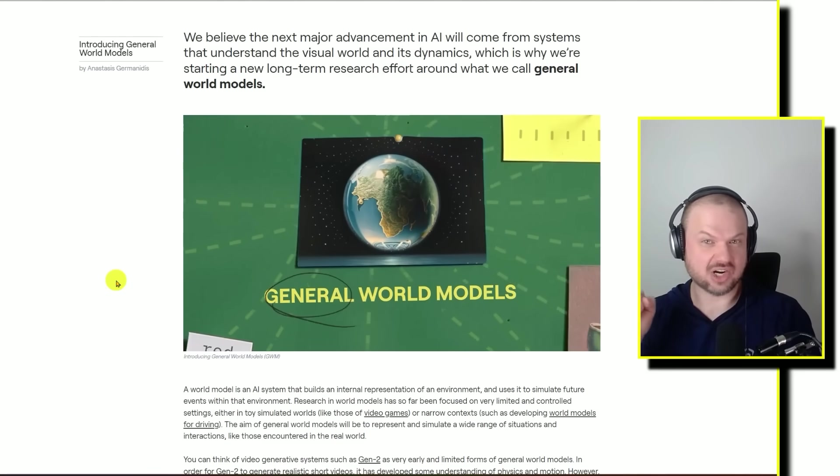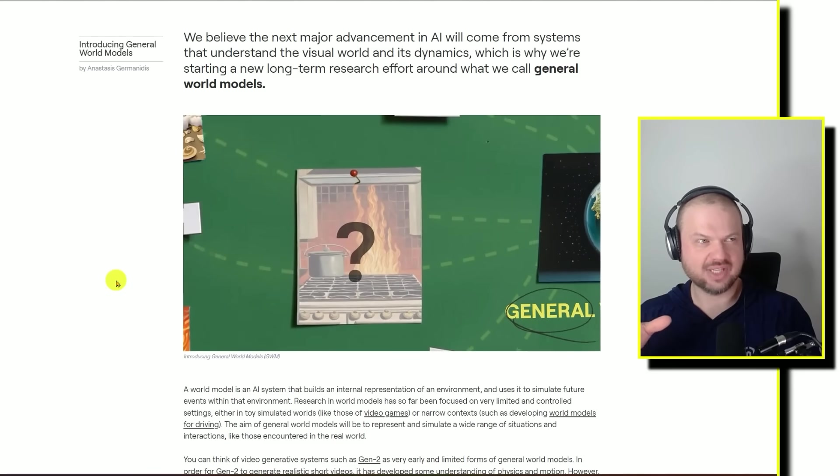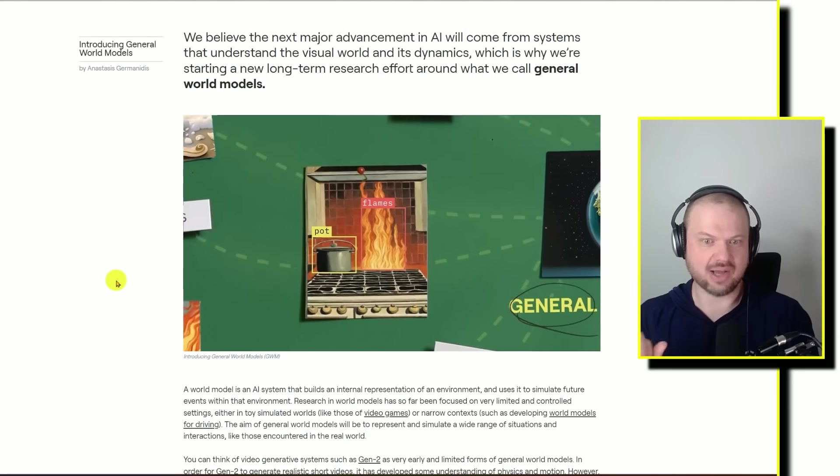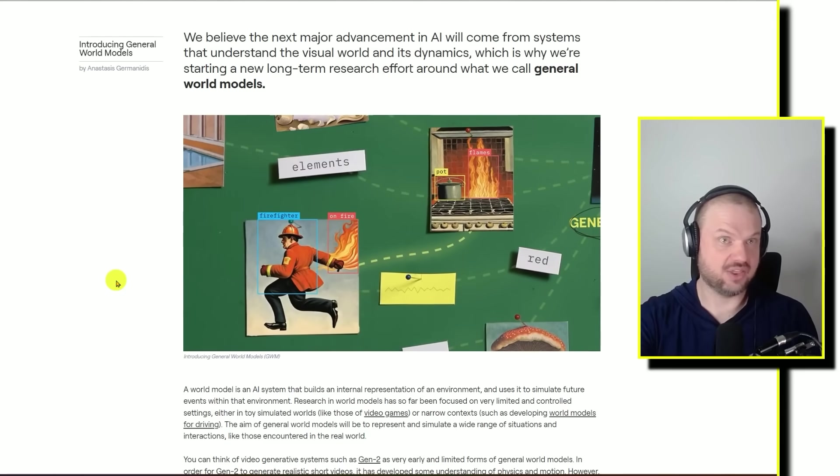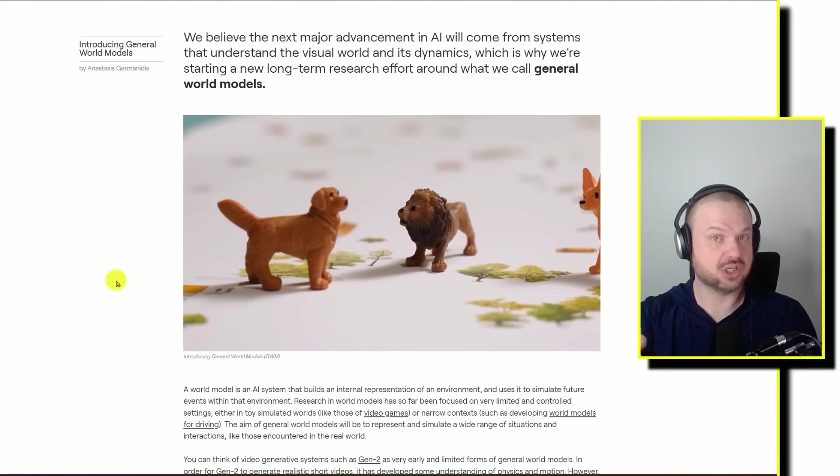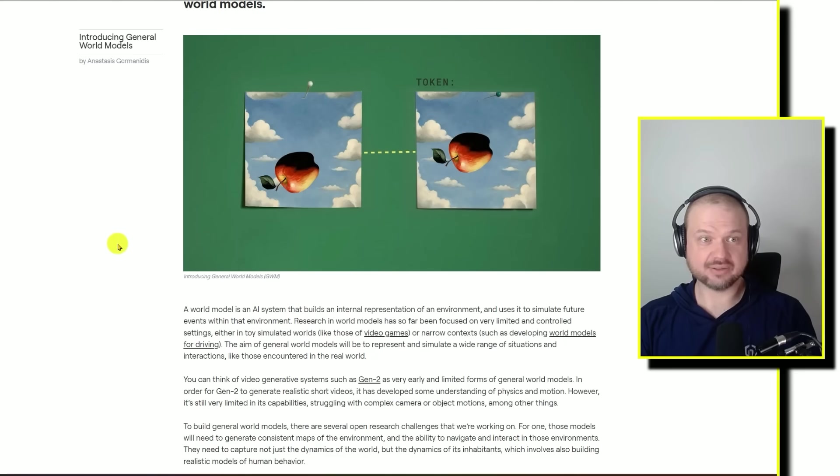So they kind of start understanding the 3D space in those 2D images. We didn't give them any data about the depth of field or how far away certain things are. But they do start to gain some quote-unquote understanding about how to position objects in the 3D space. What's further away, what's closer, et cetera.